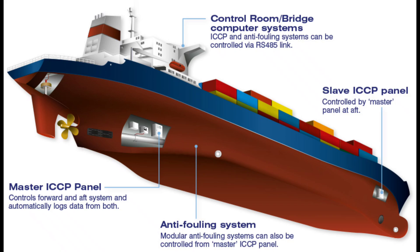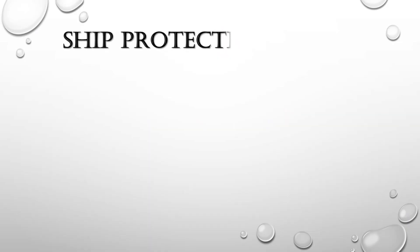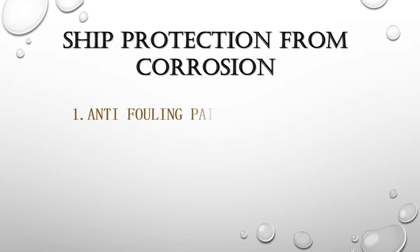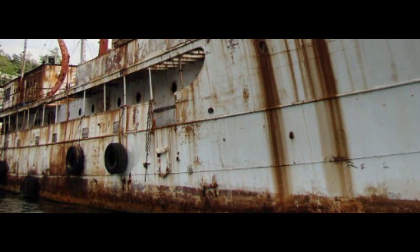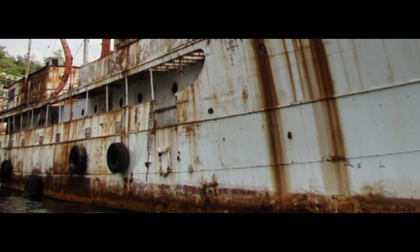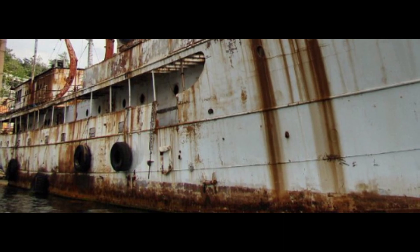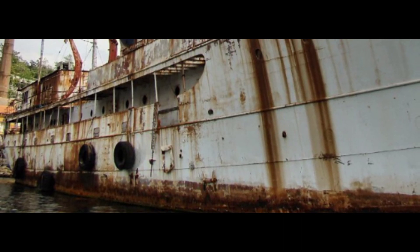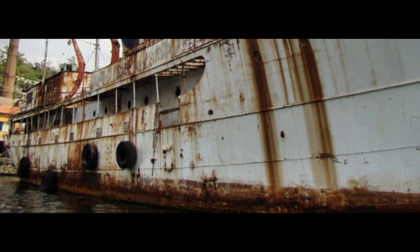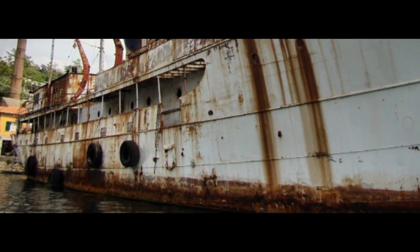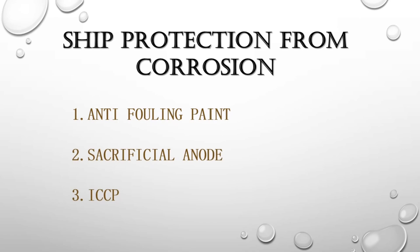Before starting ICCP, we will discuss how we can protect our ship hull from corrosion and why ICCP is preferred over all these methods. Common ways of protecting ship hull from corrosion: first is anti-fouling paints, second is sacrificial anode, and third is ICCP. Ships are often exposed to very harsh marine environments, and the ship's hull is vulnerable to environmental corrosion.